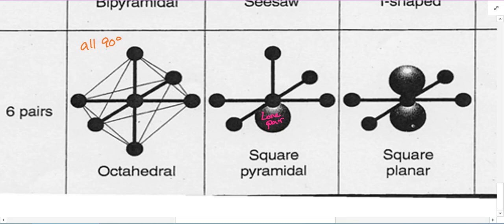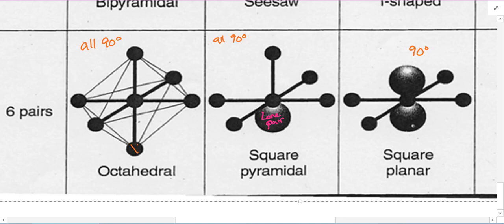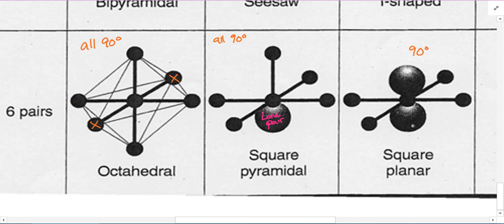Square pyramidal has all 90-degree bond angles — north, south, east, west, and then up. Square planar is also all 90 degrees. Going from octahedral to square pyramidal, you're removing one atom. Going from octahedral to square planar, you remove two atoms on opposite sides of the molecule.